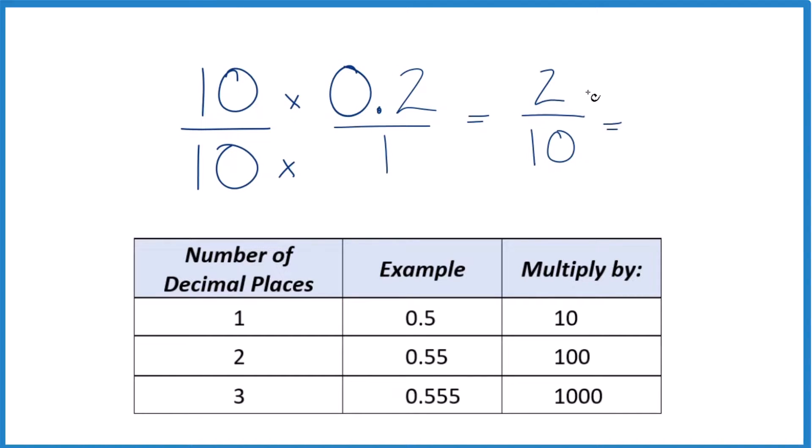Since these are both even numbers, let's simplify it. 2 divided by 2 is 1. 10 divided by 2 is 5. So we could convert that to 1 fifth.